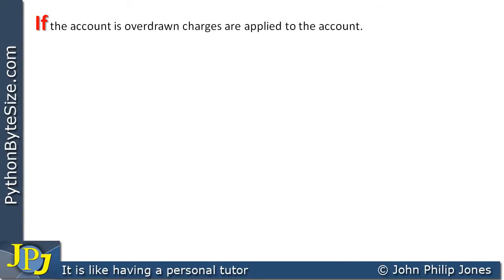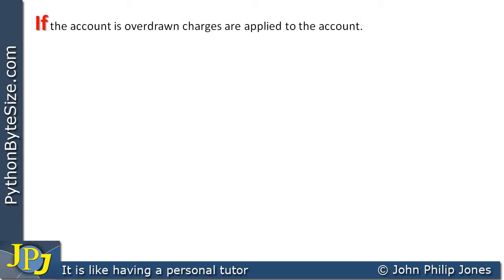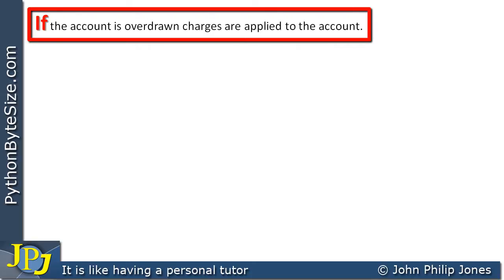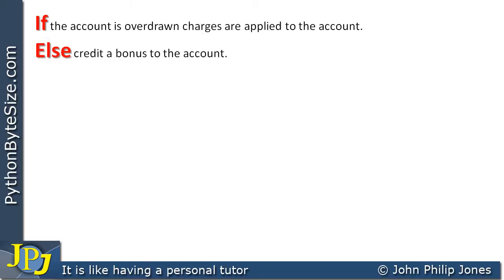Let's take the specification we've already been looking at — if the account is overdrawn, charges are applied to the account — but let's change the spec slightly. At the end of the day, if the customer has got money in the account, they're given a bonus. Not much money, but some bonus is given to them so long as their account isn't overdrawn. We can write this as: if the account is overdrawn, charges are applied to the account, else credit a bonus to the account.